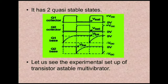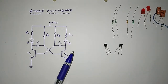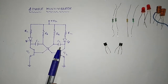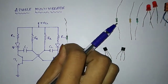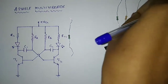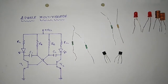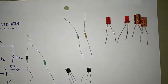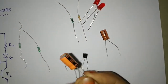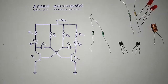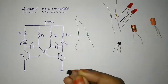Let us see the experimental setup of the transistor astable multivibrator. This is the circuit diagram of the astable multivibrator. In this circuit we can observe resistors. As collector resistors, we are using 1kΩ resistors. As base resistance we use 100kΩ resistors. To adjust the time constant of the circuit, we are using 100uF capacitors. As this is a transistor multivibrator, we are using two transistors — the BC547.